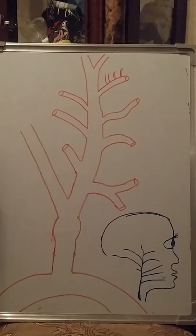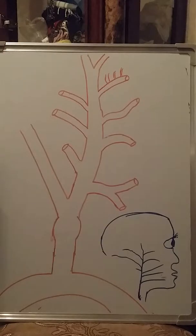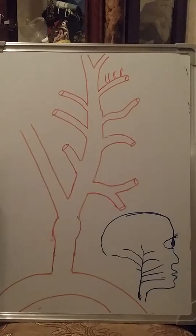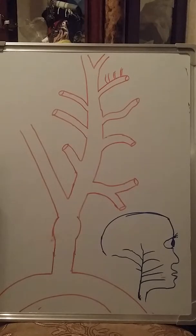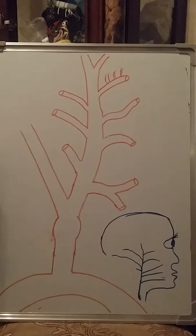Hi friends, this is our third lecture about the anatomy of the cardiovascular system. Today we are going to discuss the branches of the external carotid artery, what their functions are, and which parts of the body they supply with blood.